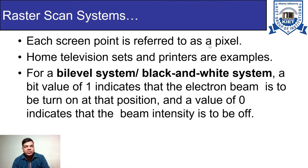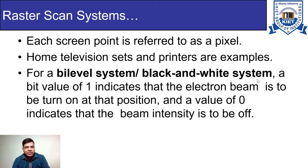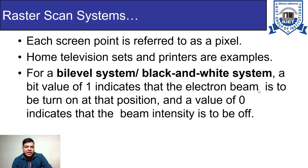Each screen point is referred to as a pixel. Home television sets and printers are examples. For a bi-level or black and white system, only one bit is stored corresponding to each pixel. If the value of the bit is one, the electron beam is turned on; if the value of any pixel is zero in the frame buffer, the intensity of the electron beam is turned off.